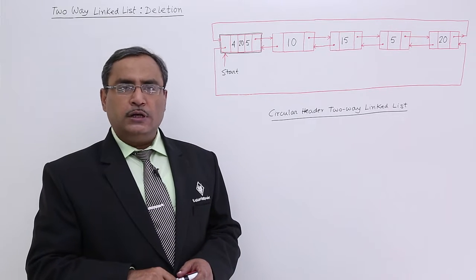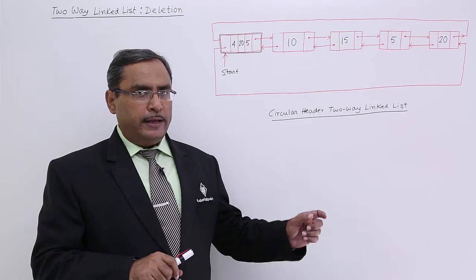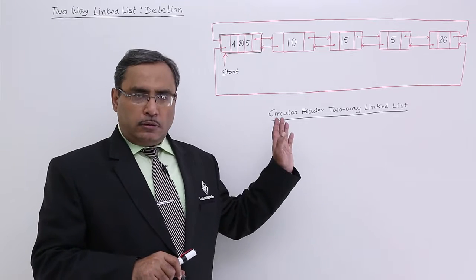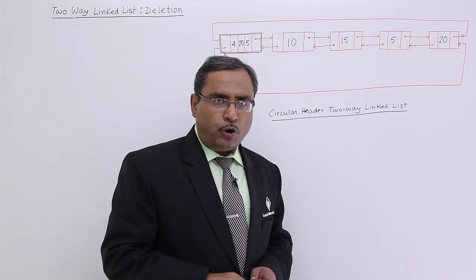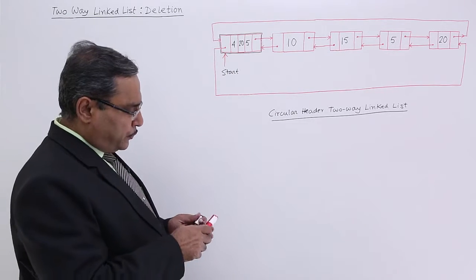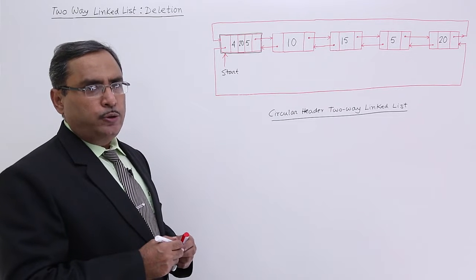Here, we shall delete one of the nodes. And what are the required steps? We will be writing them here. We are not going to write the full algorithm because the main steps are the most important. Now, let us suppose there is a particular node with the info 15 is going to be deleted.